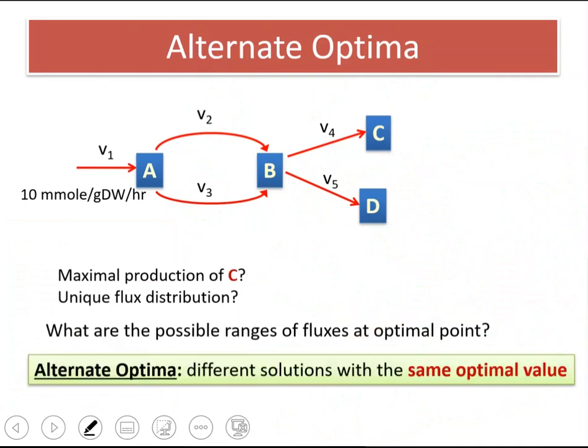So alternate optima is different solutions, different solution vectors that satisfy the constraints in your problem, mass balance constraints and reversibility measurement constraints. And they have the same optimal value.